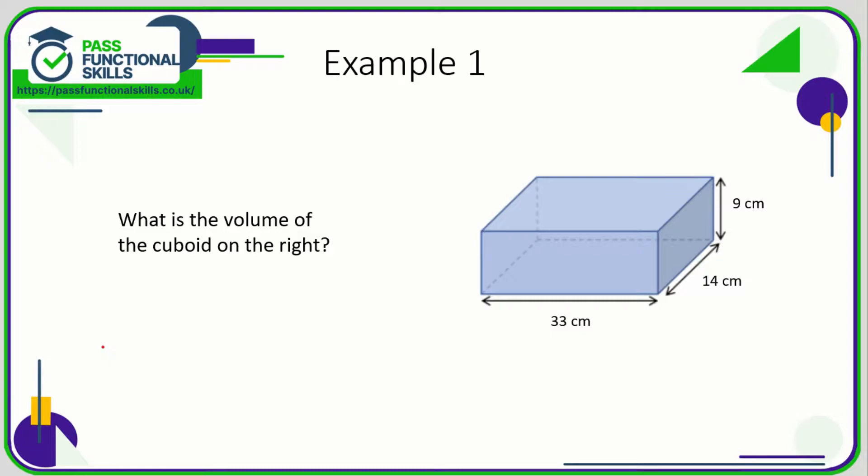Let's take a look at a couple of examples. The first one is: what is the volume of the cuboid on the right? The formula for the volume of the cuboid is the three dimensions multiplied together, so it's simply 33 times 14 times 9.